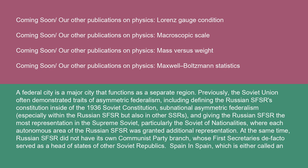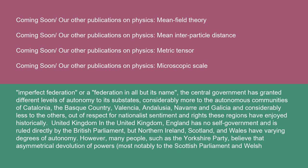Spain: Spain, which is either called an imperfect federation or a federation in all but its name, has a central government that has granted different levels of autonomy to its sub-states — considerably more to the autonomous communities of Catalonia, the Basque Country, Valencia, Andalusia, Navarre, and Galicia, and considerably less to the others — out of respect for the nationalist sentiment and rights these regions have historically enjoyed.